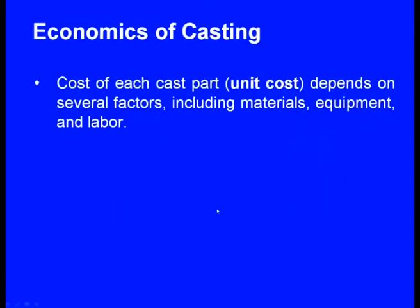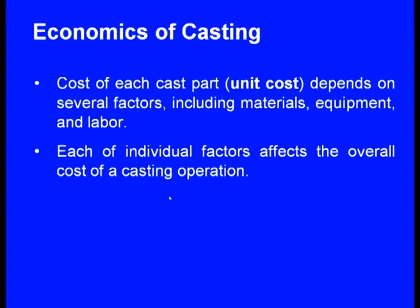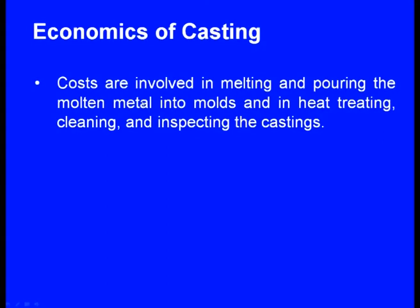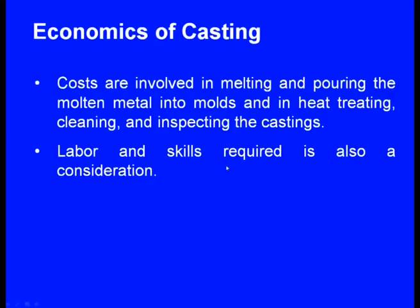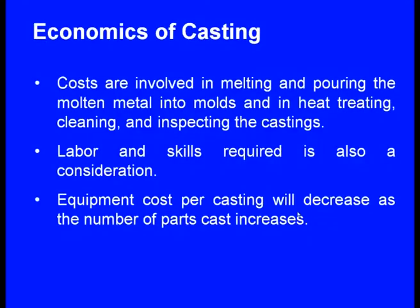Whenever we make a component, the cost should be reasonable. The cost of each cast part or unit cost depends upon several factors including material, equipment, and labor. Each individual factor affects the overall cost of a casting operation. Costs are involved in melting and pouring the molten metal into molds, and in heat treating, cleaning, and inspecting the castings. Labor and skills required is also a consideration.